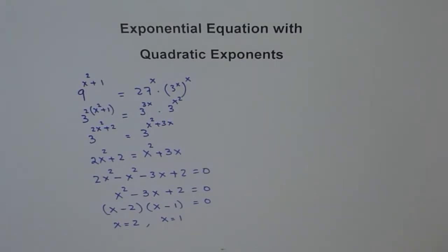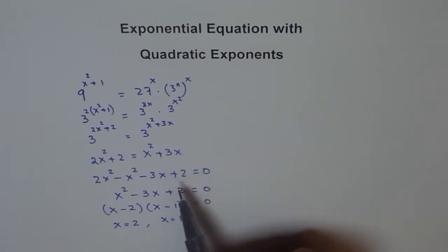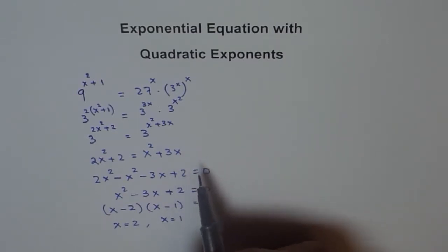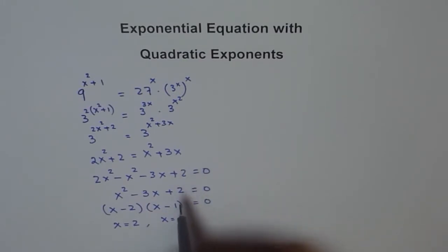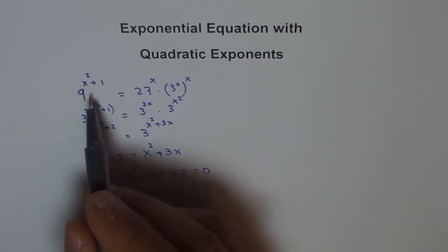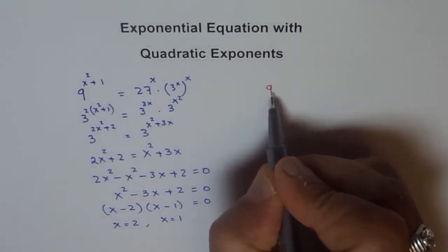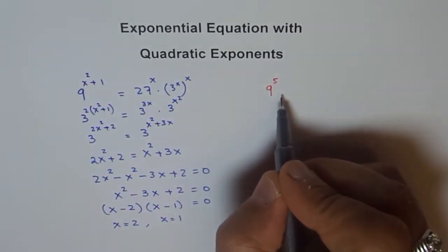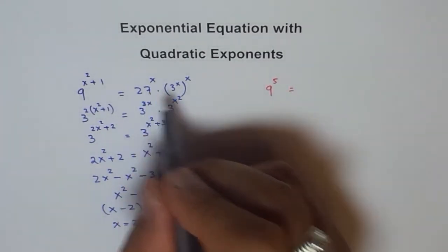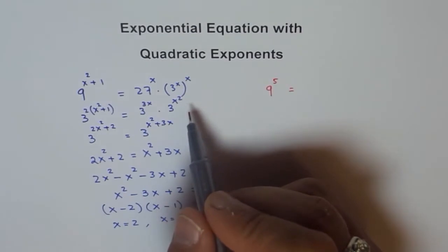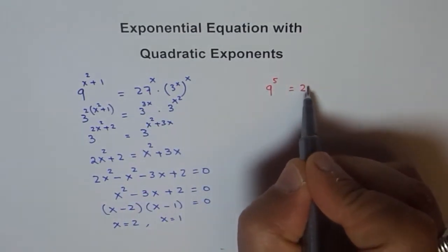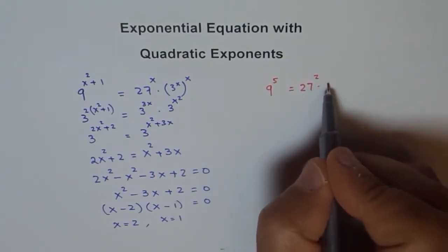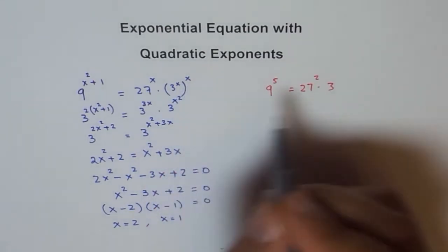We should always check whether both solutions are valid. If I put x equals 2, on the left side I get 9 to the power of 2 squared plus 1, which is 4 plus 1 equals 5. On the right hand side, putting x equals 2, I get 27 to the power of 2, times 3 to the power of 4.